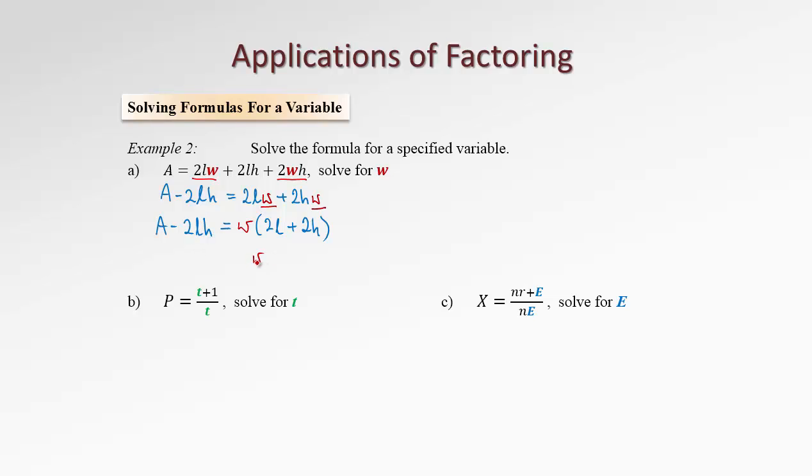And finally, as you probably expect, we need to undo this multiplication by a bracket. Therefore, really divide the whole equation by this bracket. So we'll end up with A minus 2LH over 2L plus 2H. So we solved for W.